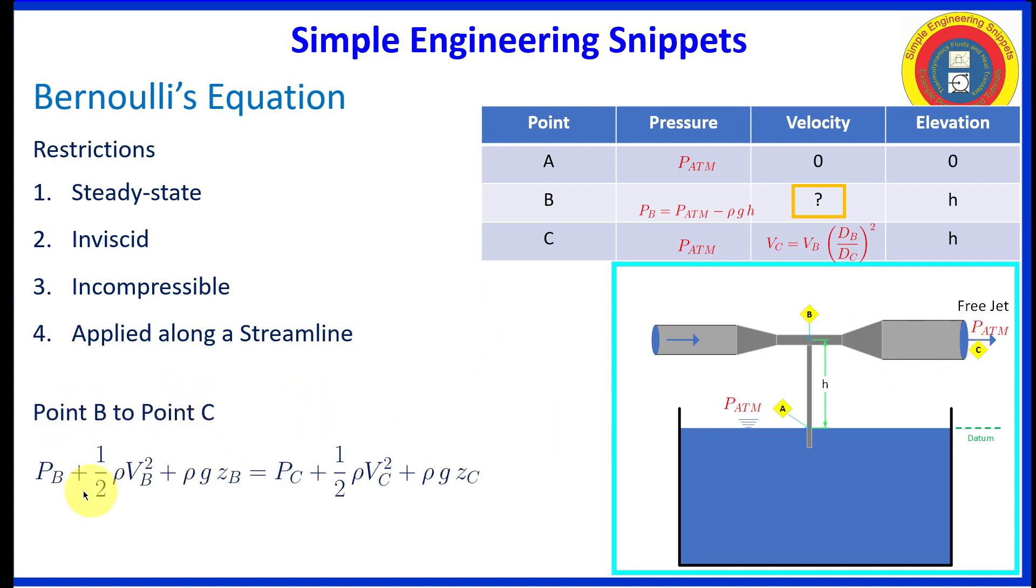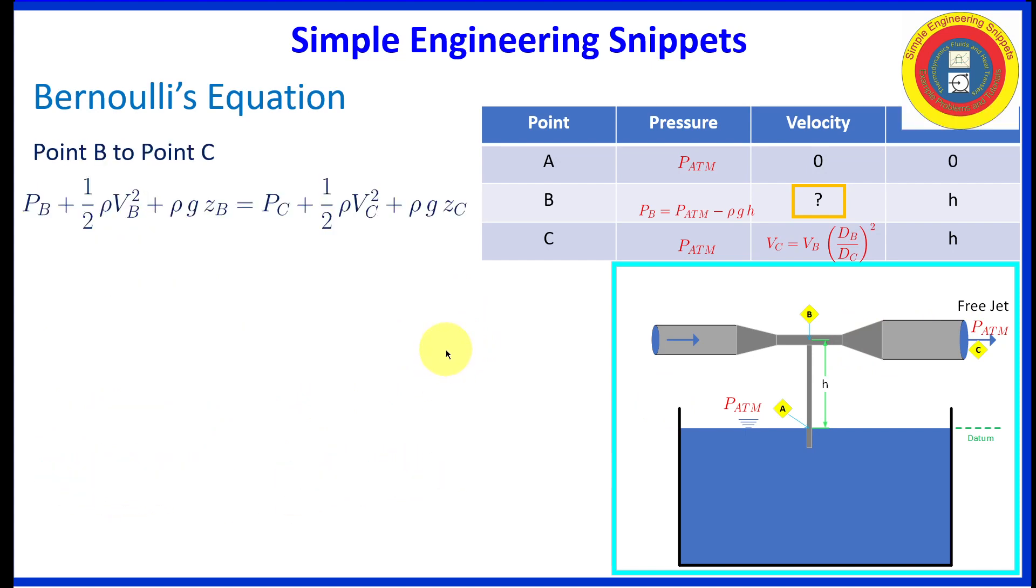All right, so this is the Bernoulli's equation applied from Bravo to Charlie. And let's work on that. And, well, we know quite a bit about that. We know the elevation at Bravo is at h. We know the elevation at Charlie is at h.